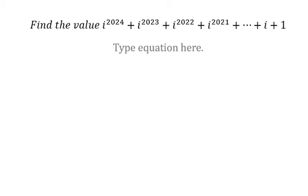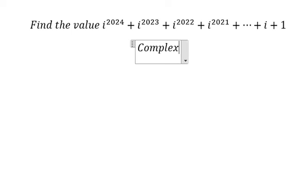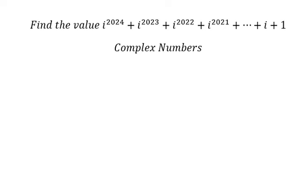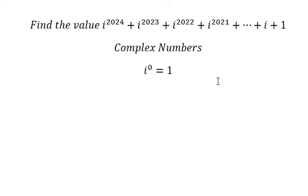Hey guys, welcome back to my channel. Today I want to show you how to find the value of this expression. This is about complex numbers. i to the power of zero equals one, and i to the power of one equals i.